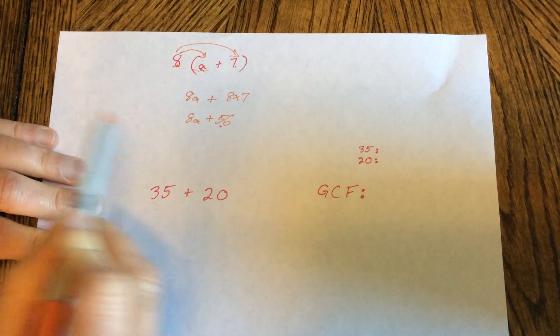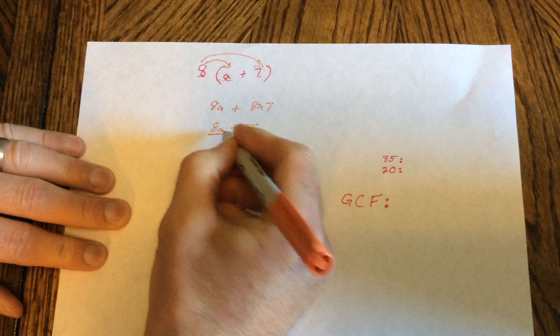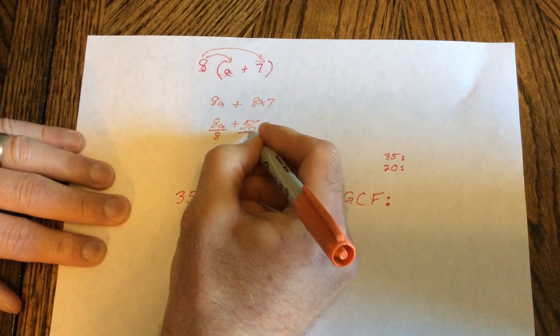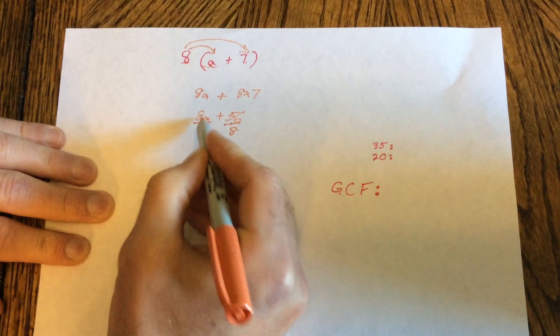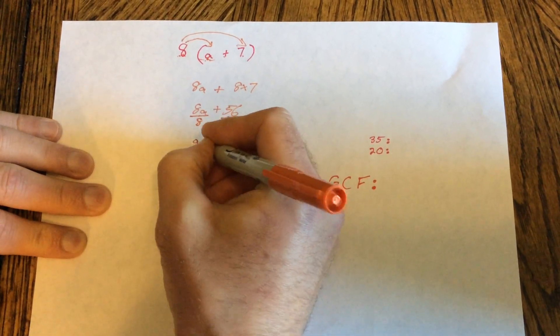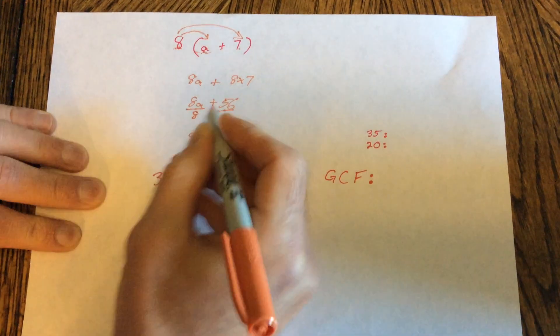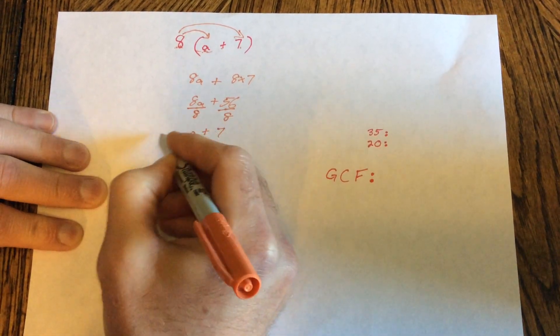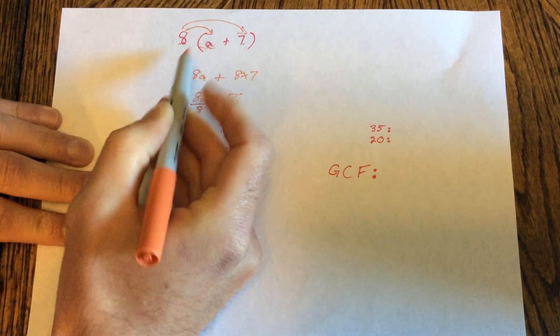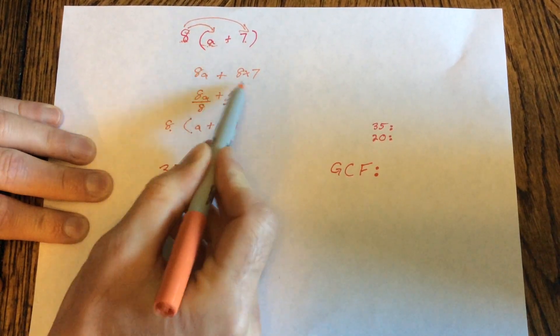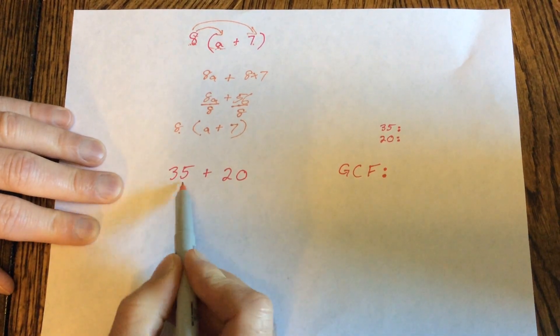Now today we're going the other way. So we're going to factor out. So we know we could factor 8 out of both of these, divide them both by 8, because we just did it the other way. So if we divide this by 8, we get a. If we do 56 divided by 8, we get 7. And now we just took that 8 and we put it on the outside. See what happens? First we went this way. And then we undid it by dividing both by 8.